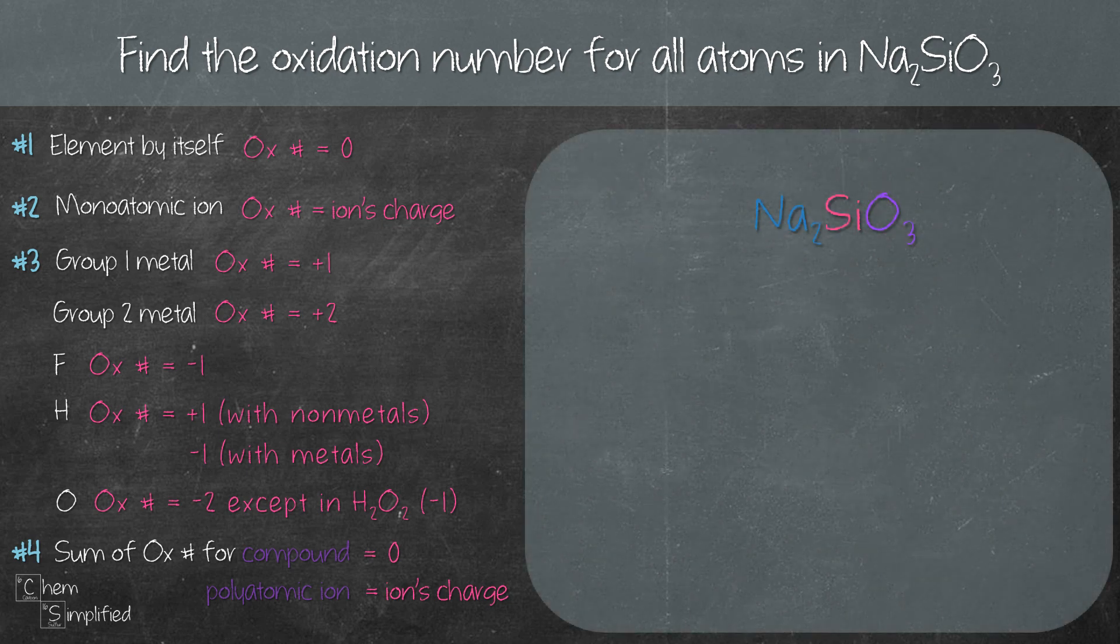According to rule number 3, the oxidation number of O in a compound is negative 2. So we've just found the oxidation number for oxygen which is negative 2.